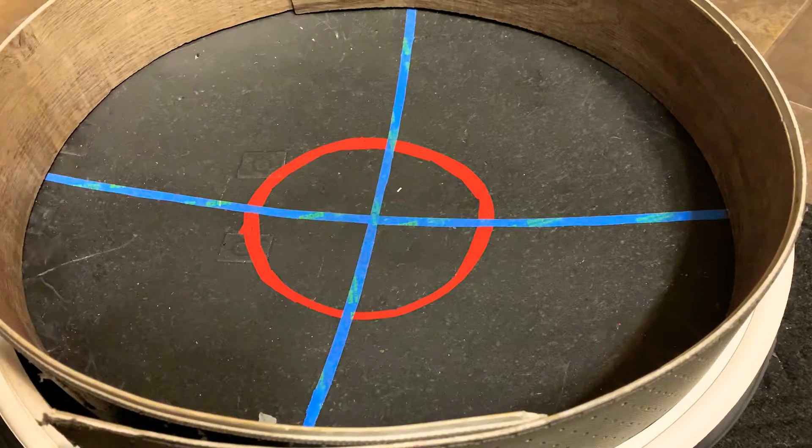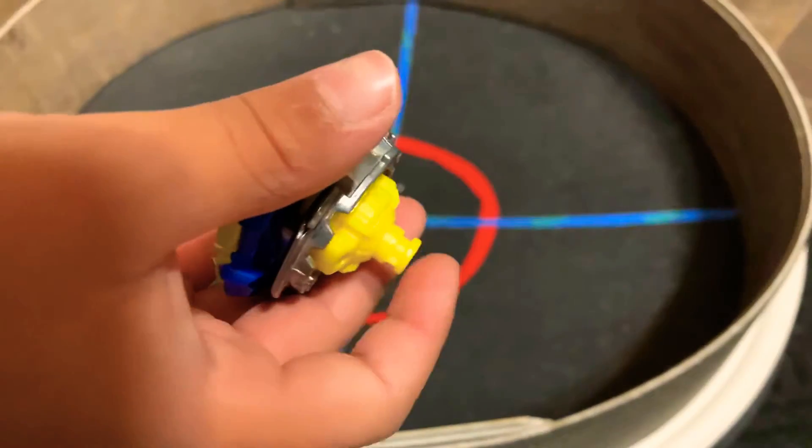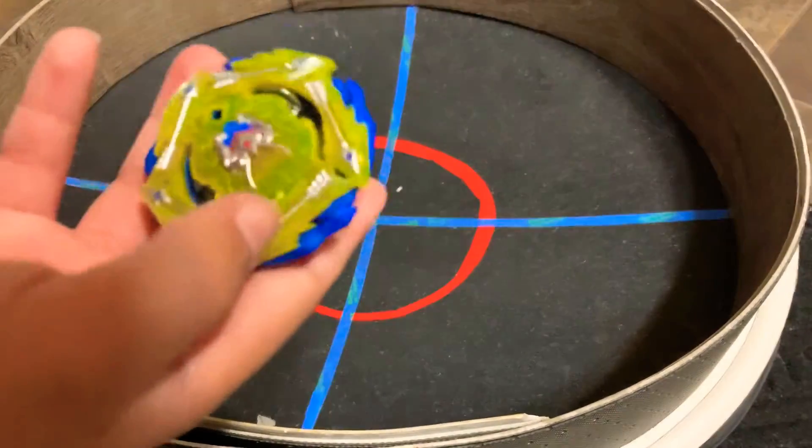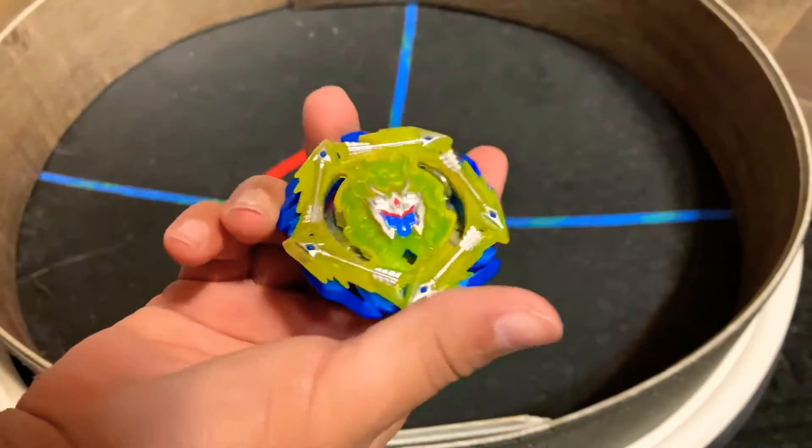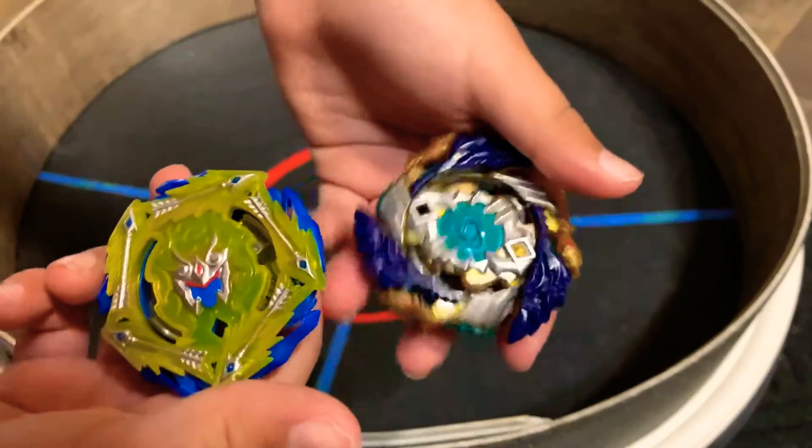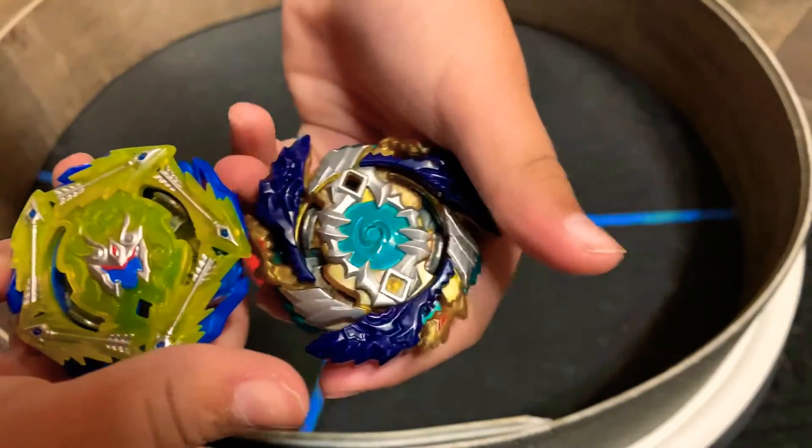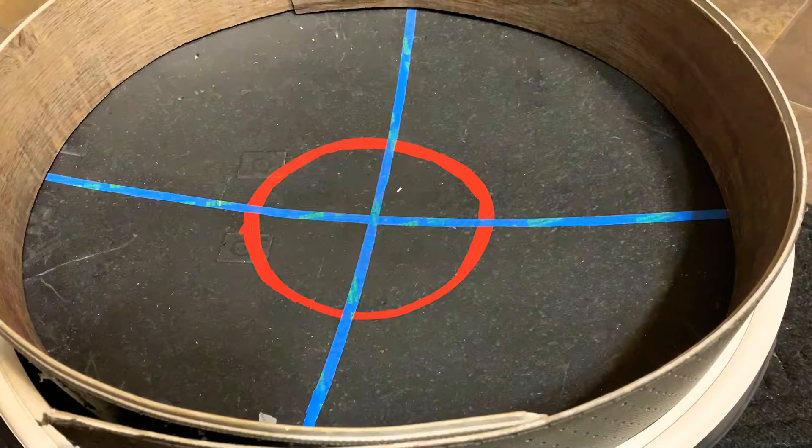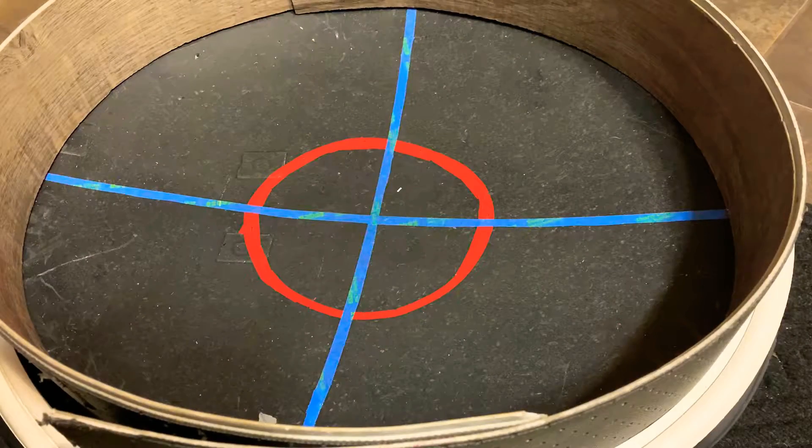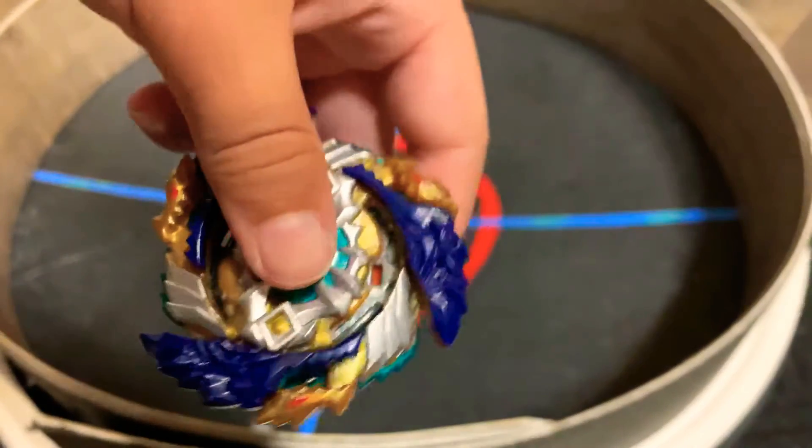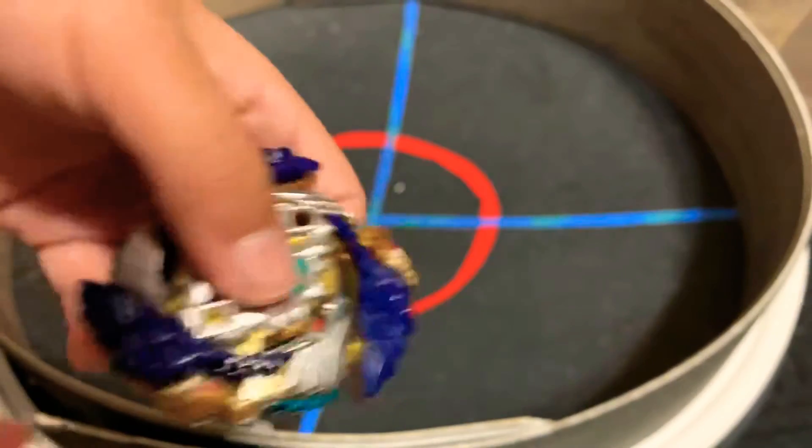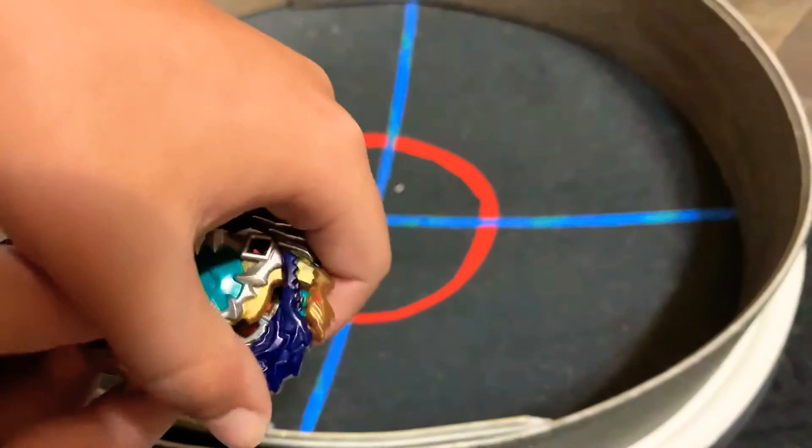I'm going to use this tip for Fafnir and this one for Turbo Achilles. From last video, it was kind of not my birthday yet so I didn't have these. I got these yesterday. So I'm going to start hand spinning by using a tap type and hand spin.